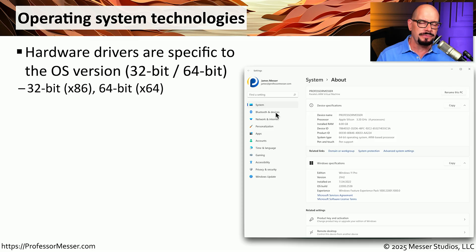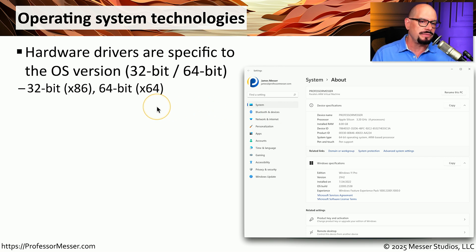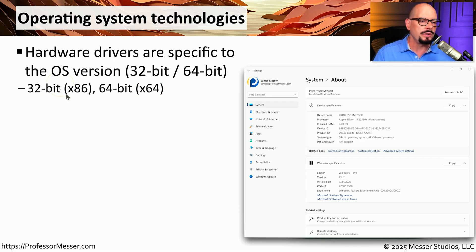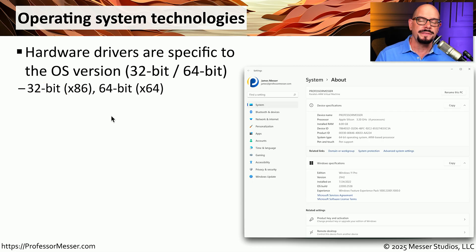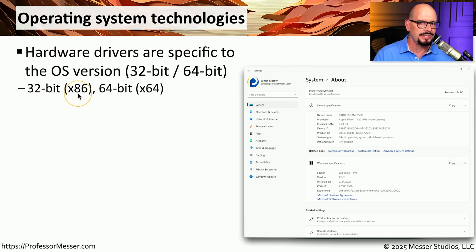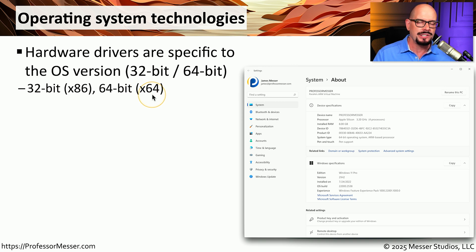There are a number of differences in operation between a 32-bit and a 64-bit operating system. For example, if you're running a 64-bit OS, your hardware drivers need to be written for a 64-bit operating system. If you're using a 32-bit operating system, then you need to make sure your hardware drivers are written for a 32-bit OS. In the world of Intel processors, 32-bit processors are often referenced as x86, a reference back to the older 8086-style CPU, and 64-bit processors are referenced as x64.